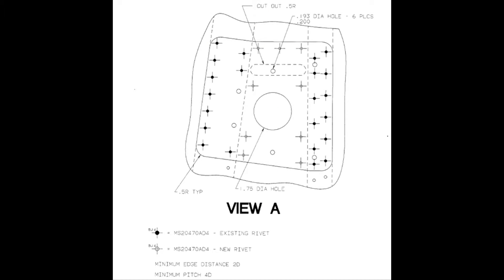Remember to identify the rivets before disassembly and make a sketch of the area you are working in. This sketch will better prepare you when performing a repair and can be used as a quick reference when reinstalling the rivets that were previously identified, so there is no question of what type of rivet was removed.